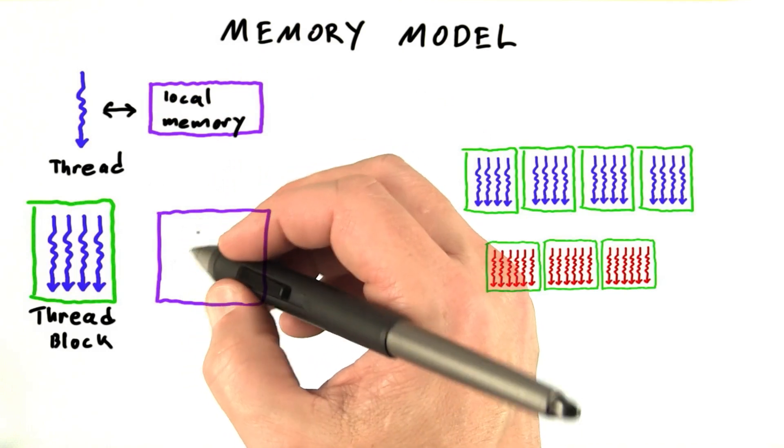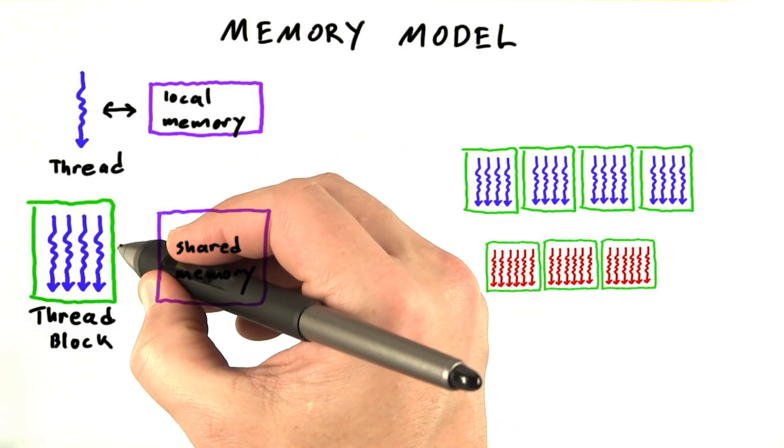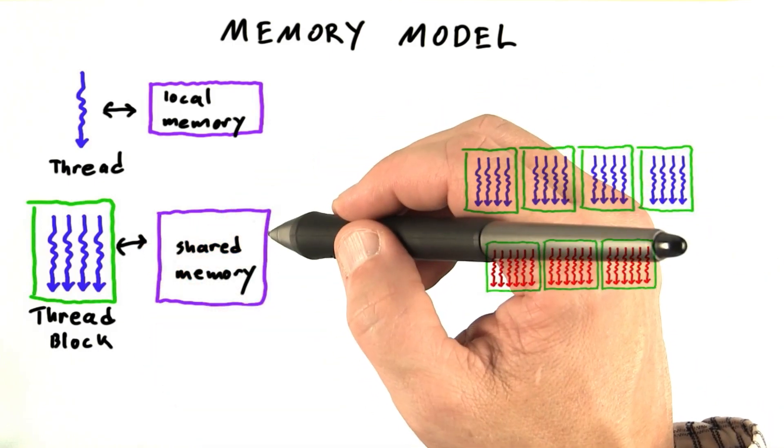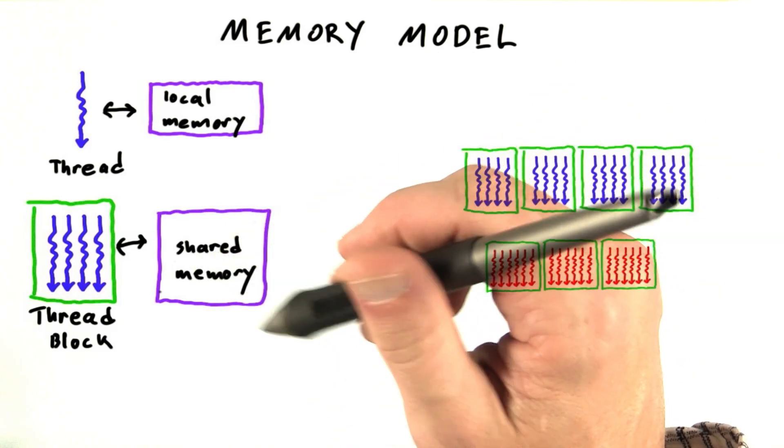And the threads in a thread block also have access to something called shared memory. So all the threads in this thread block can read and write to the per-block shared memory. It's important to understand that shared memory is shared among the threads in a block. This is a small amount of memory that sits on the SM directly.